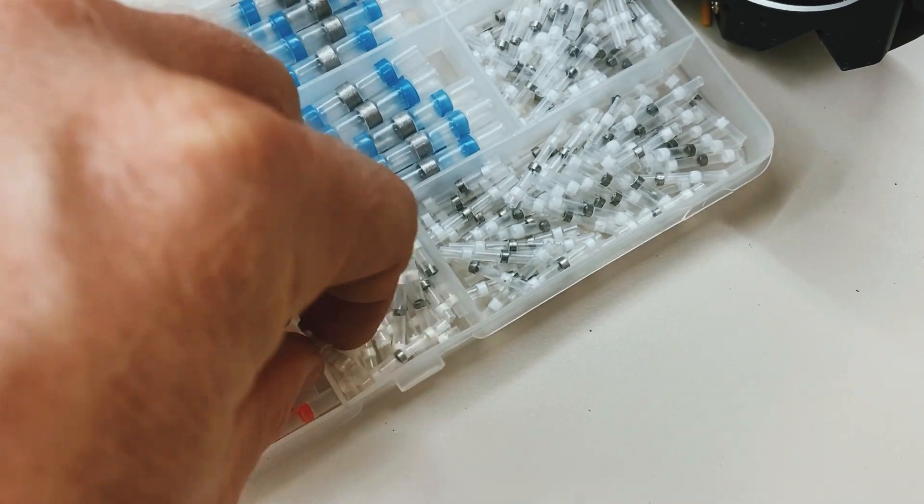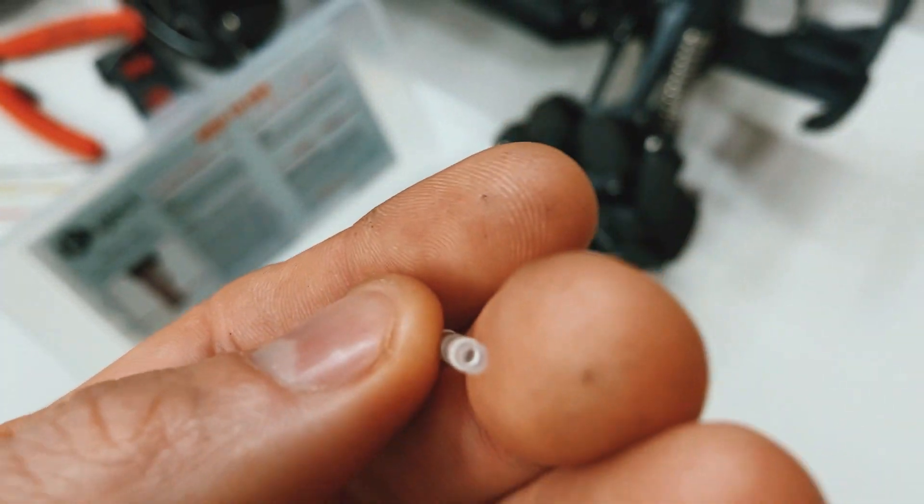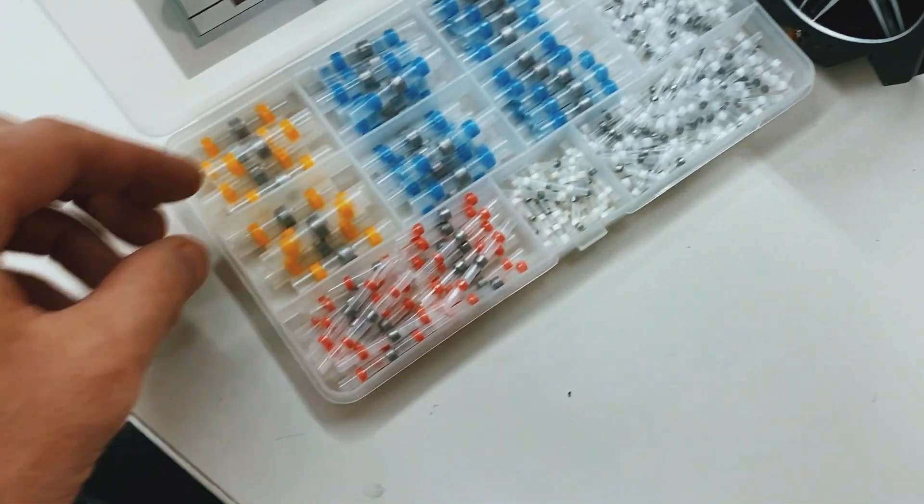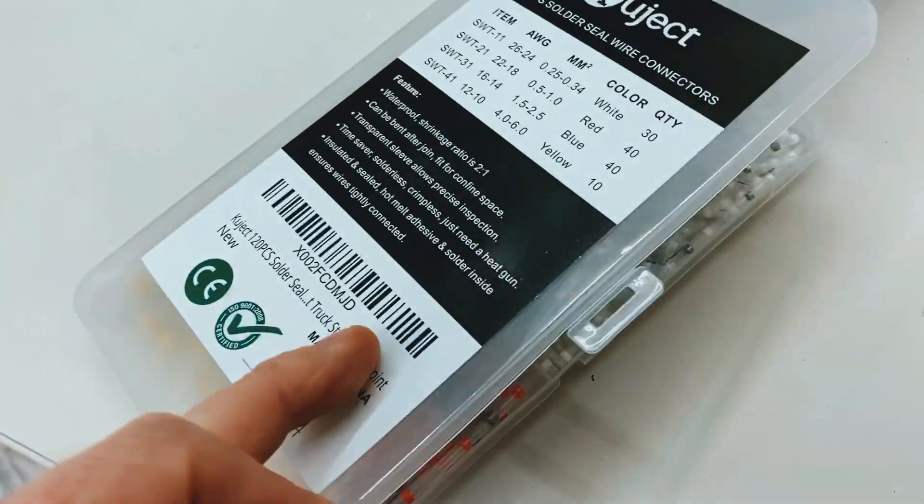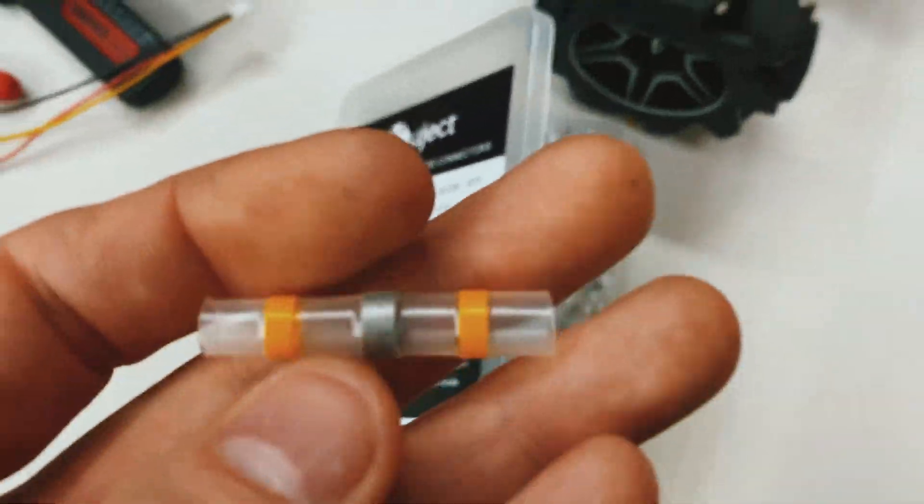So they come in different sizes. They go as low as 26 gauge wire. So that's like your standard ethernet size wire. And they go all the way up to, let's see, 10 gauge, at least with the kit that I have.